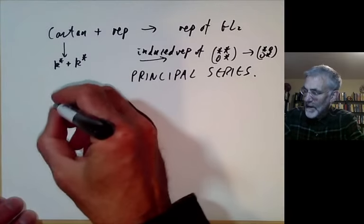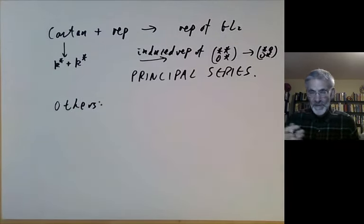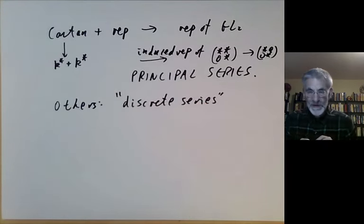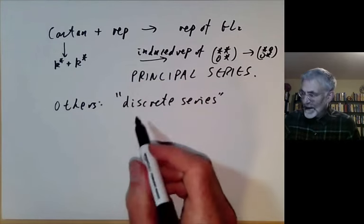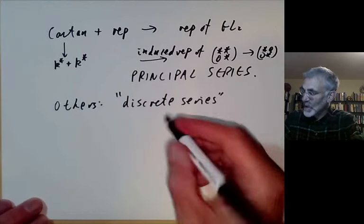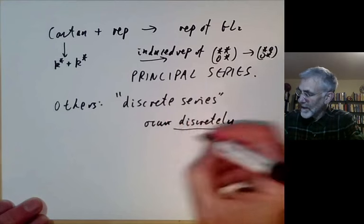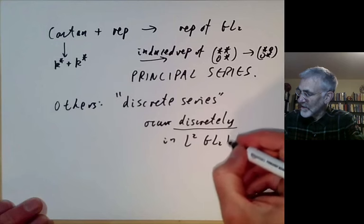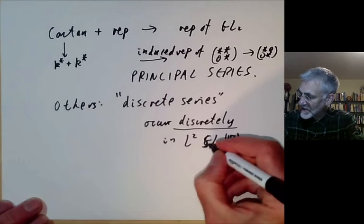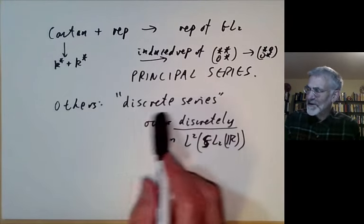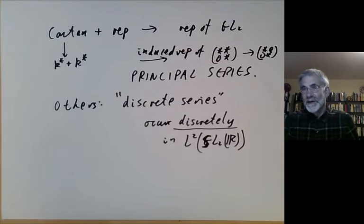These induced representations are called principal series representations; they're mostly irreducible but sometimes not. The others are rather trickier and are sometimes called discrete series, among other names. The name 'discrete series' comes from people originally doing this theory over the reals, where the discrete series occur discretely in L²(GL2(ℝ)), or more precisely in L²(SL2(ℝ)). Over other fields, discrete series tends to mean something vaguely analogous, though the naming isn't completely systematic.